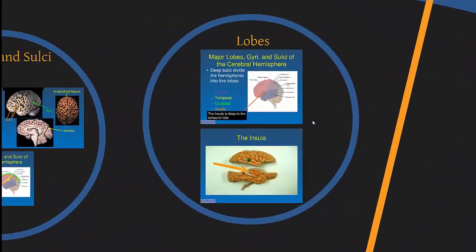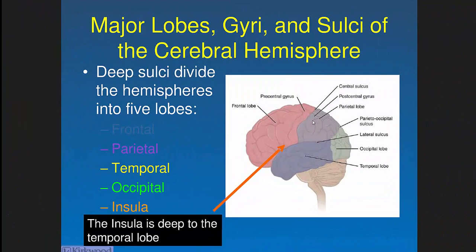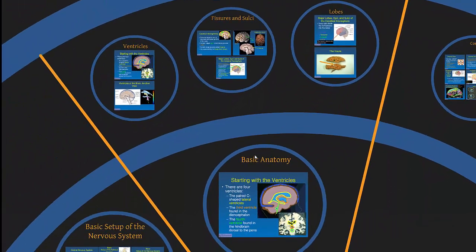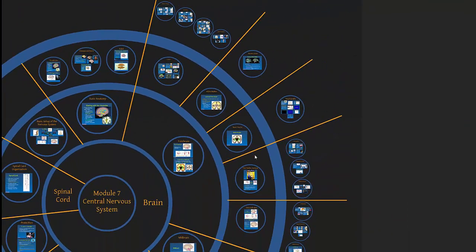The central sulcus also separates two really important structures: the precentral gyrus, which is a major motor area, and the postcentral gyrus, which is a major sensory area. These sulci and gyri form five different lobes: the frontal lobe (in front), the parietal lobe, the occipital lobe (major location of vision), the temporal lobe, and the insula — which is tucked deep inside and only visible if you pull the temporal lobe out.